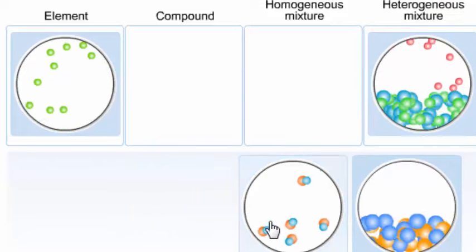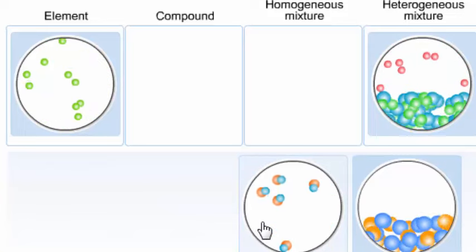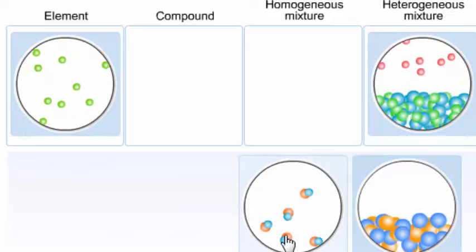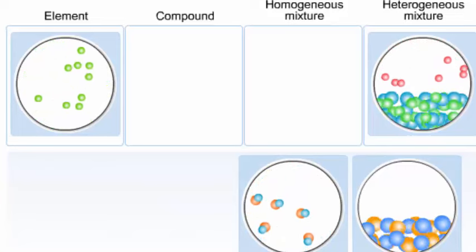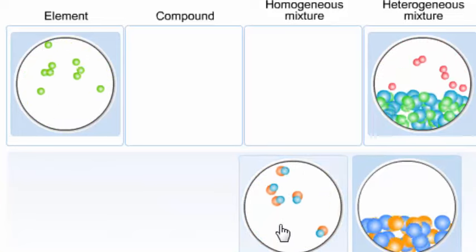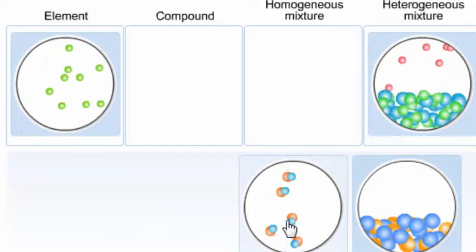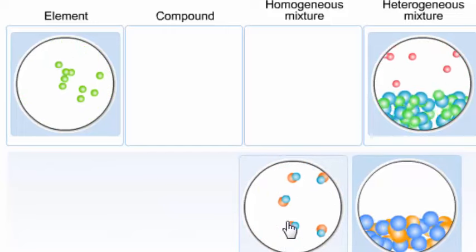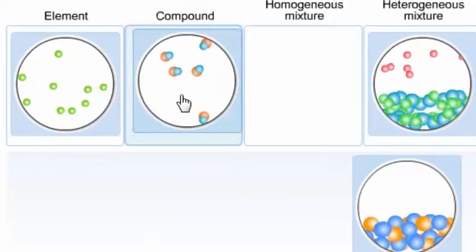This third one is an example of a compound, because we have units of matter, in this case, composed of two different types of atoms. A blue atom and an orange atom stuck together. So this is a compound.